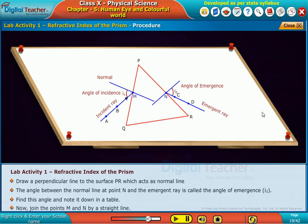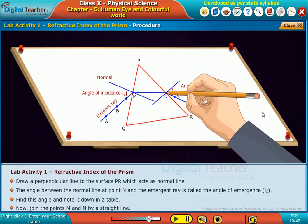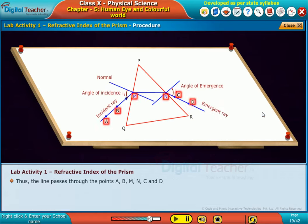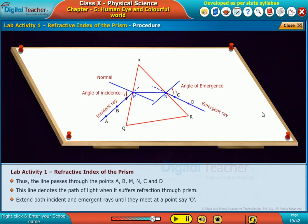Now join the points M and N by a straight line. Thus, the line passes through the points A, B, M, N, C and D. This line denotes the path of light when it suffers refraction through prism. Extend both incident and emergent rays until they meet at a point, say O. Here the angle between these two rays called angle of deviation D.